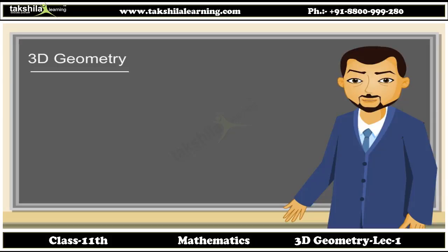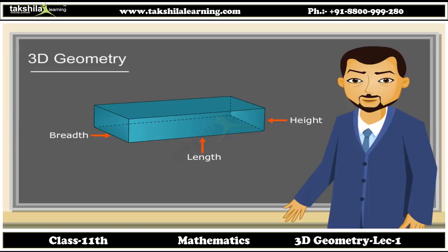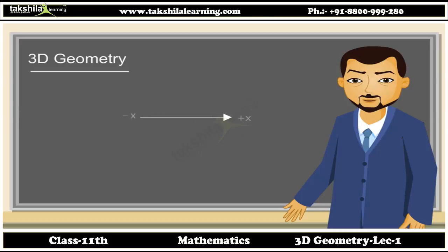Real-world objects exist in 3 dimensions. For example, a cuboid or a box is completely described by 3 parameters: Length, Breadth, and Height. Corresponding to that, each point in the Cartesian space has 3 coordinates: X, Y, and Z. The X-axis is along the length of the screen, the Y-axis is along the height of the screen, and the Z-axis is the one coming out of the computer screen.